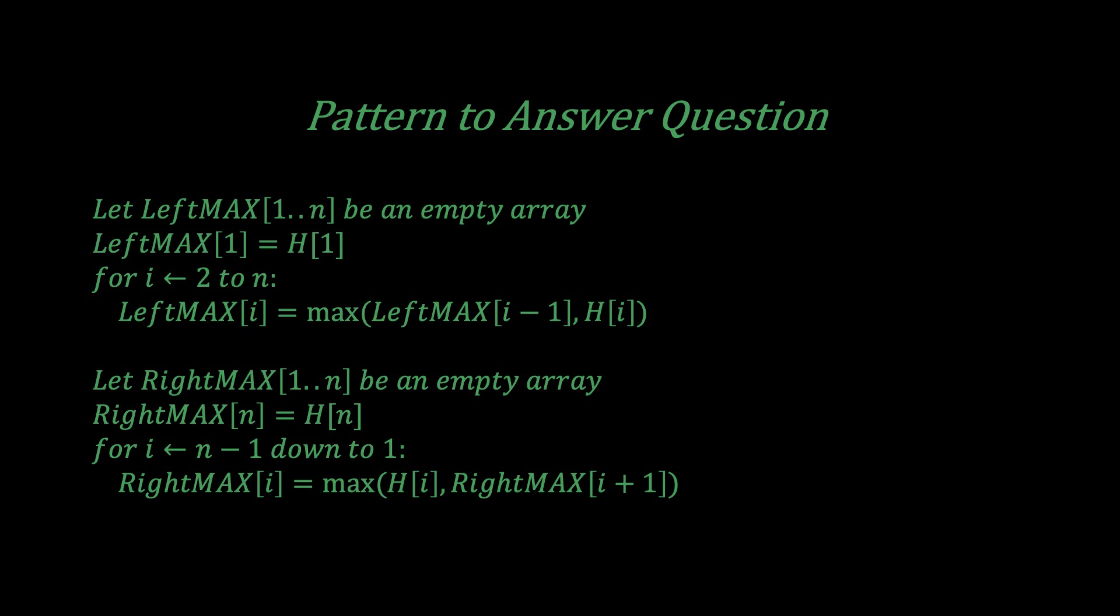So how does this translate into pseudocode? Well, for LeftMAX, start by defining LeftMAX[1] as H[1], then do a loop from i equals 2 to i equals n, and set LeftMAX[i] as the maximum of LeftMAX[i-1] and H[i] using the pattern that we observed. Repeat this process and you'll eventually fill in the LeftMAX table in O(n) time. You can also do the same thing for RightMAX, but instead you loop in reverse, starting from n-1 and going down to 1.